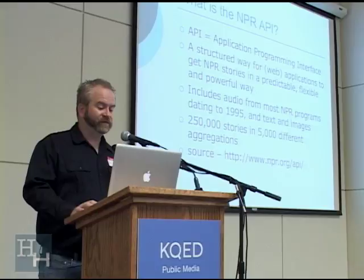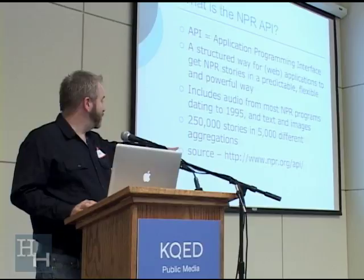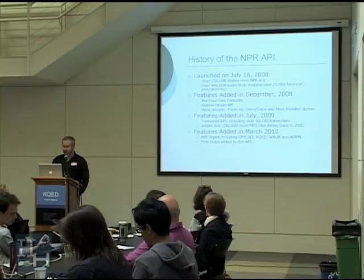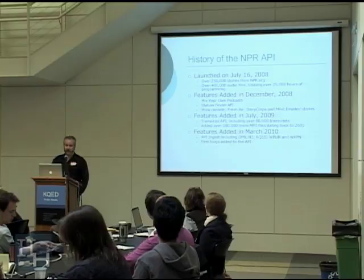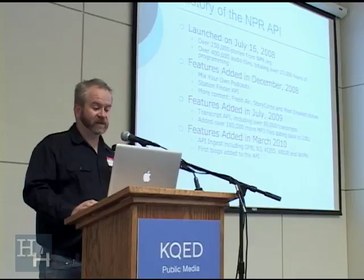At least 250,000 stories are available and 5,000 different content aggregations. The URL to memorize is www.npr.org. It initially started with just stories, but in December added features like Mix Your Own Podcasts, Station Finder API, in case you have an application that needs a Station Finder feature. More content was also launched, including Fresh Air, StoryCorps, and most emailed stories.